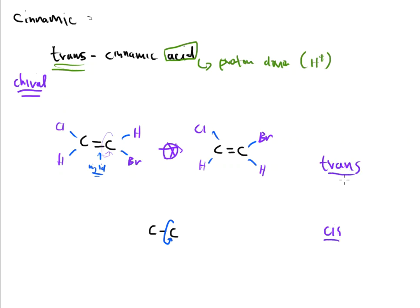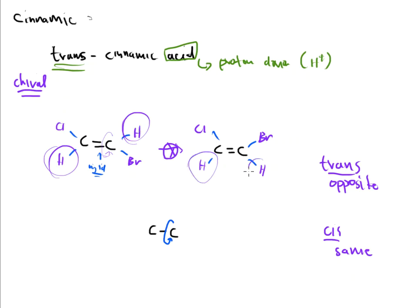Because these are two different molecules, we need a way to label them — we do that through terminology called 'trans' and 'cis.' Trans means opposite; cis means the same. On these organic molecules we look at the hydrogens: if a hydrogen is pointed down on one side and up on the other, they're on opposite sides — that's the trans form. If both hydrogens are on the same side, that's the cis molecule.